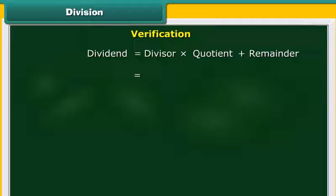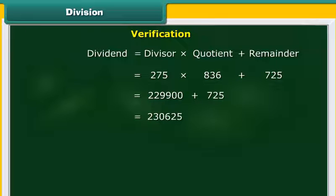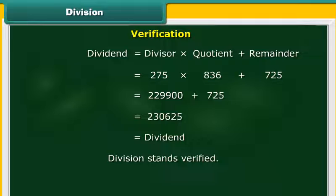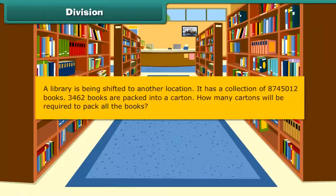That is equal to 275 multiplied by 836 plus 725, which is equal to 229900 plus 725, which is equal to 230625, which is equal to the dividend. Therefore, the division stands verified.